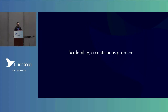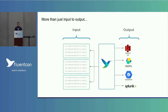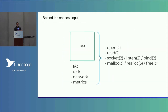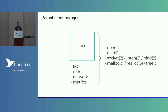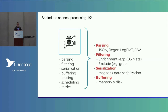Scalability is a continuous problem. We always have more data, and how do we optimize? The quick answer is more nodes, more clusters, but sometimes that adds other problems. If we talk about how things work, we've got data input — and internally, dealing with an input means opening files, performing a lot of syscalls, creating sockets, listeners, allocating and reallocating memory, freeing out that memory. For metrics also, it's the same thing. So it's a pretty complex and tough job.